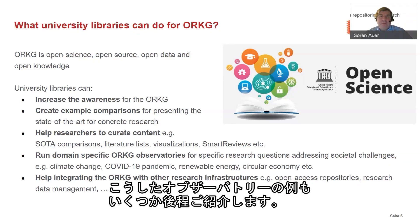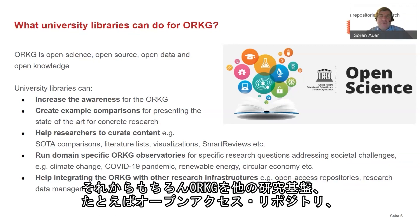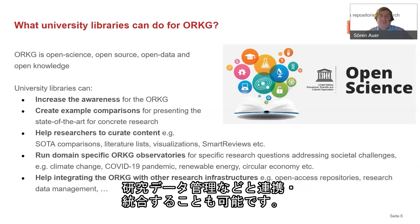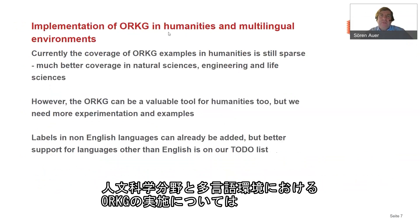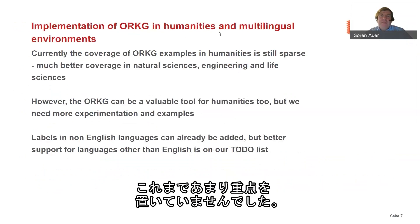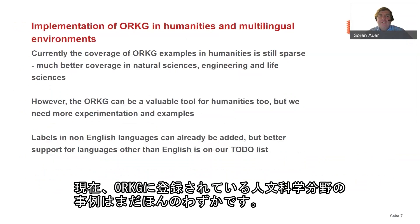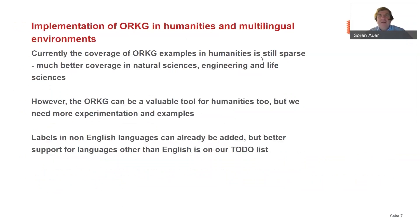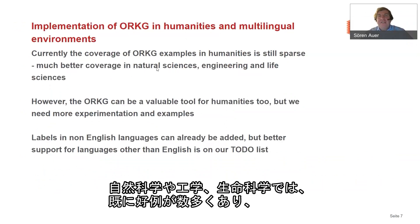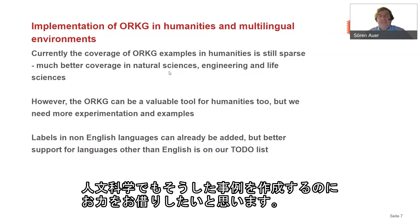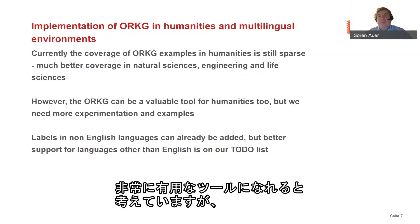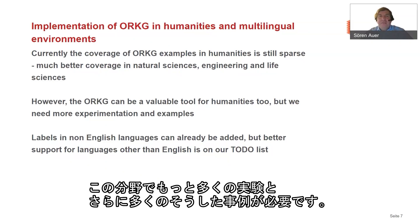We can also collaborate on integrating the Open Research Knowledge Graph with other research infrastructures such as open access repositories and research data management. Regarding implementing the ORKG in humanities and multilingual environments — this hasn't been our focus so far. Currently coverage of ORKG examples in humanities is still sparse. In natural sciences, engineering, and life sciences we already have many nice examples, but we need much better coverage in humanities and more experimentation there.